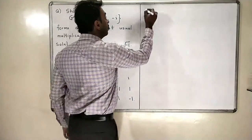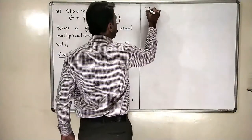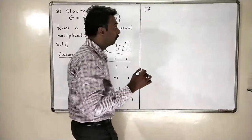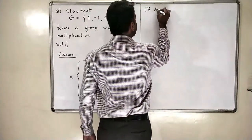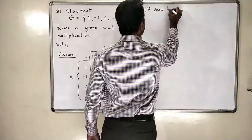Second is associativity. We will say that associativity holds, because associativity holds in set of complex numbers. Associativity holds.